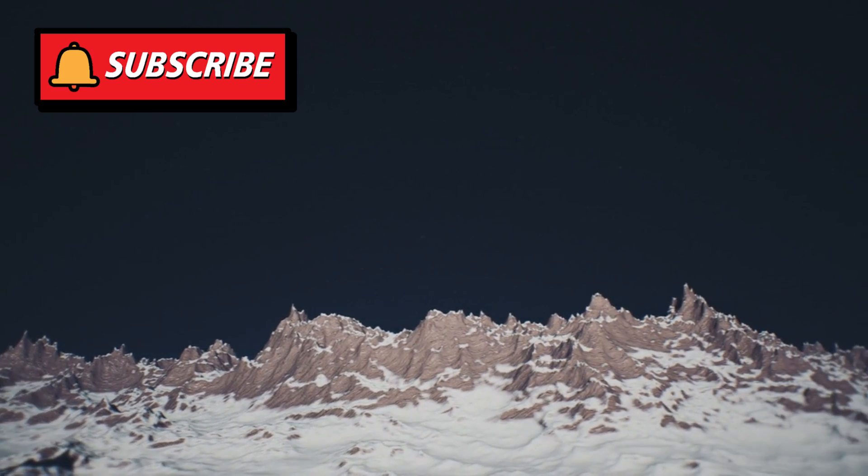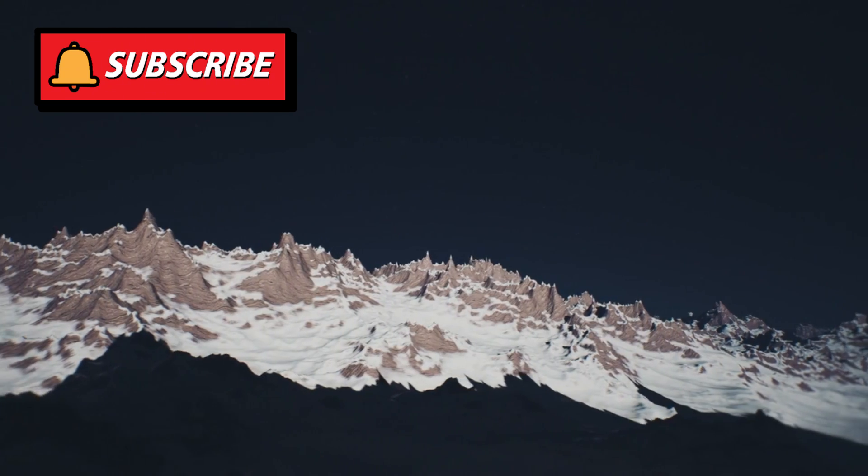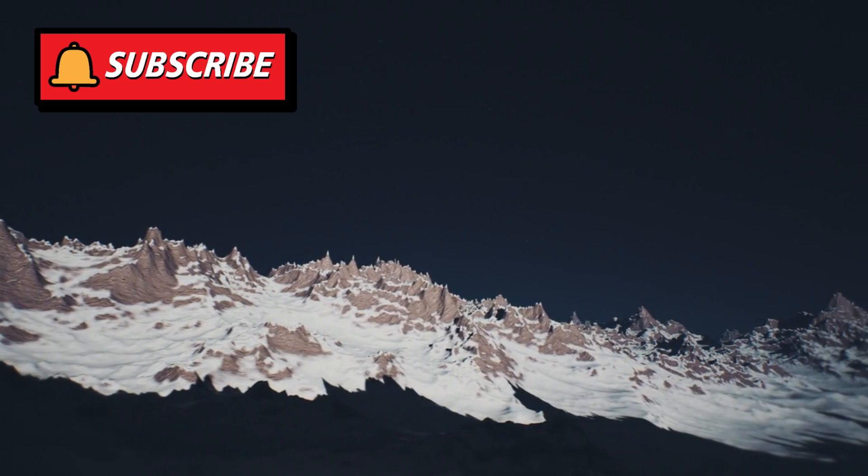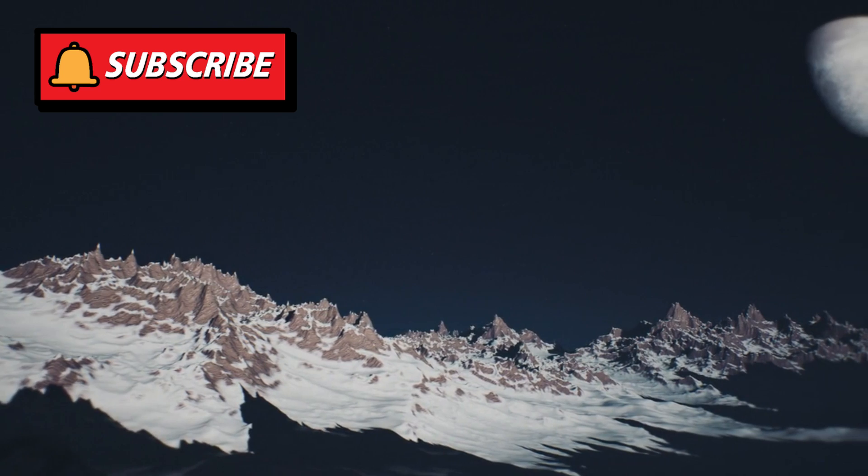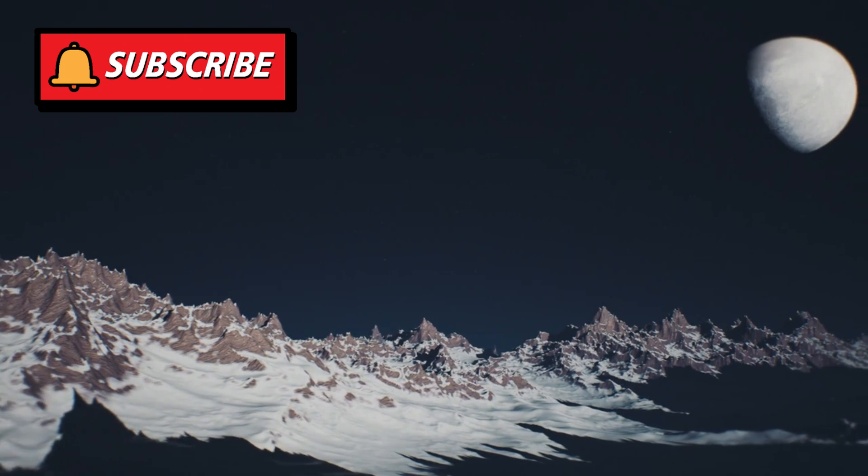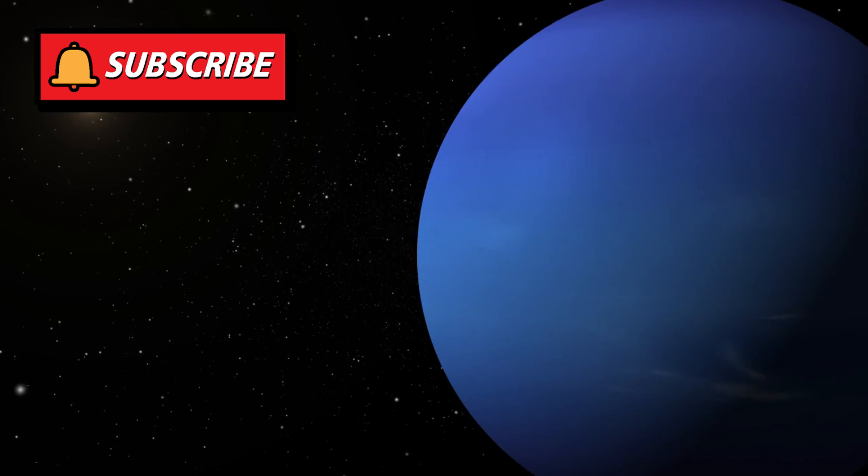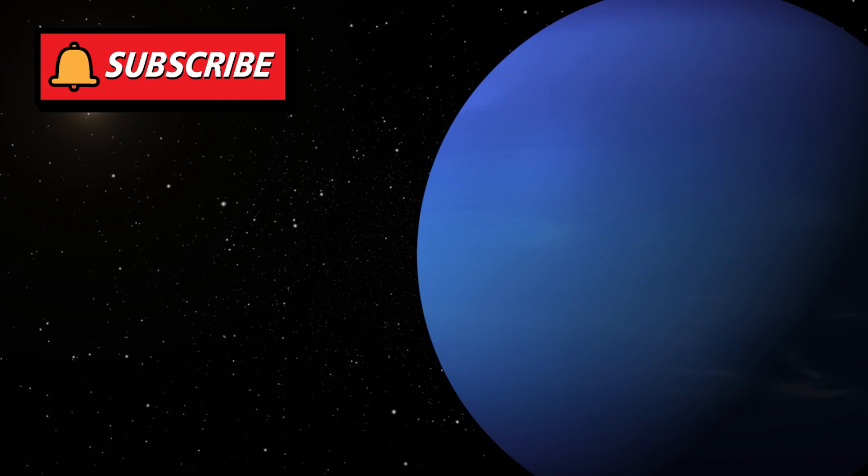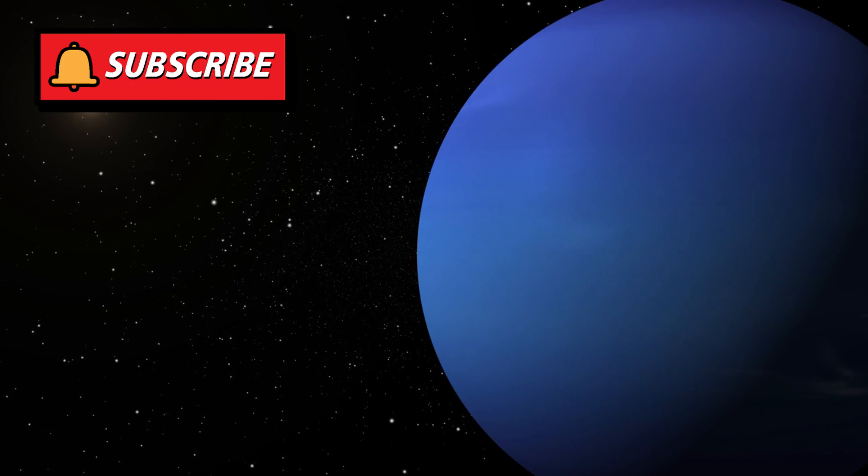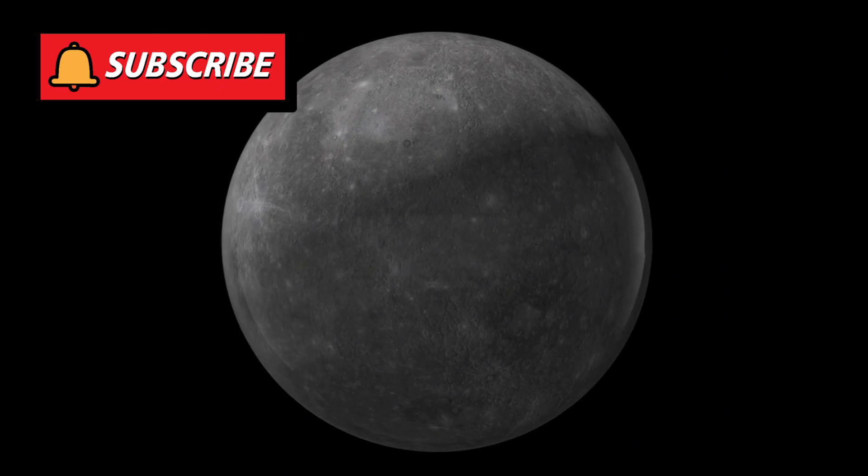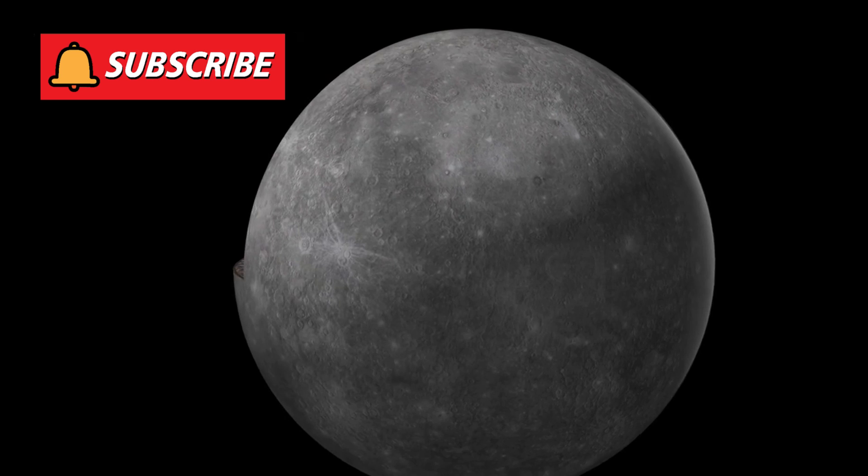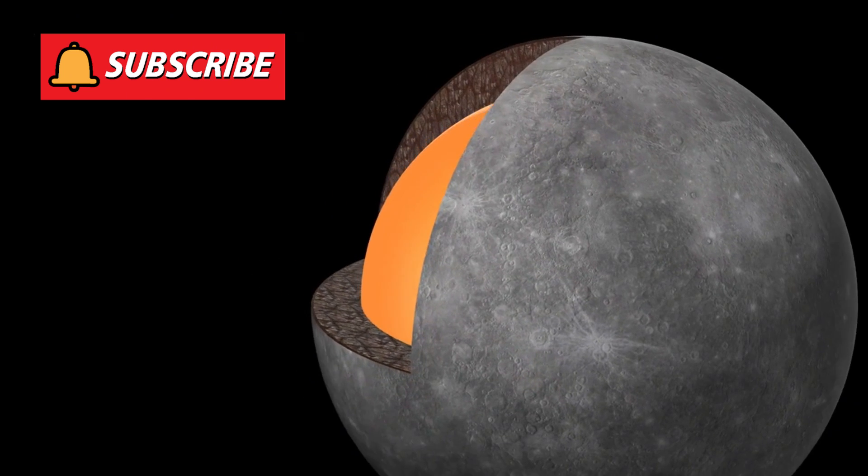Pluto's icy composition adds another layer of drama. Its surface, rich in nitrogen, methane, and carbon monoxide ices, would vaporize upon impact, releasing gases that could briefly brighten Neptune's atmosphere. Meanwhile, Neptune's hydrogen-helium makeup would absorb much of the shock, though the collision's heat might trigger fusion reactions in its core. Such an event would offer scientists a rare chance to study planetary interiors and atmospheric chemistry in real time.